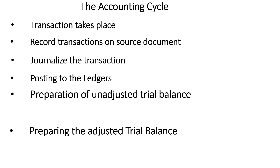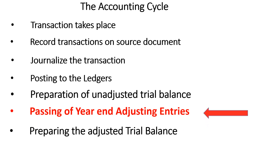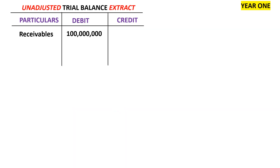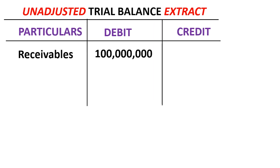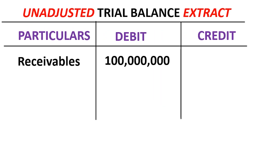We are going to look at different scenarios. Remember that we are providing for bad and doubtful debts at the point in the accounting cycle where we are making year-end adjusting entries. Year-end adjusting entries are made after you have prepared a trial balance. Looking at our screen, let's look at the first year — maybe the business has just begun. The extract of the trial balance shows receivables of 100 million.